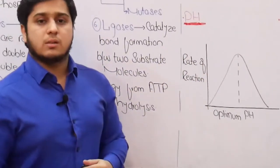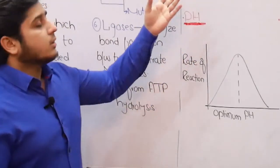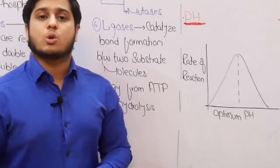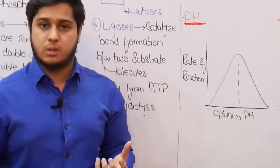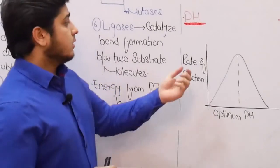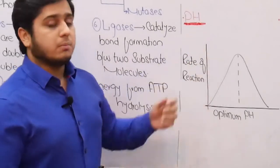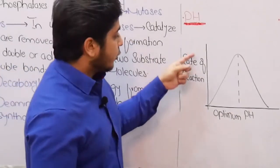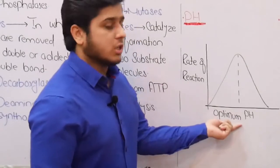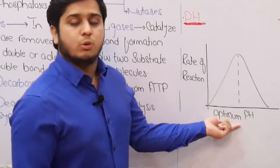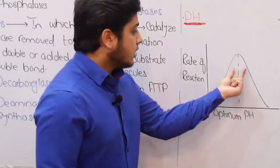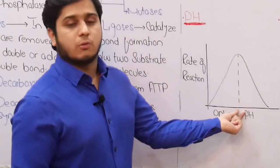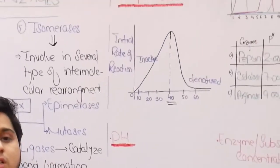The next factor is pH. Just like enzymes require a specific temperature, they also require a specific pH value, known as the optimum pH. At the optimum pH, the rate of reaction is at its maximum. The graph shows enzyme activity at different pH values.